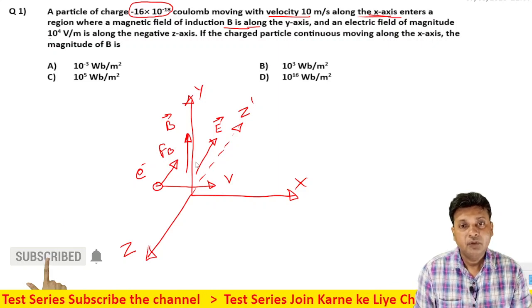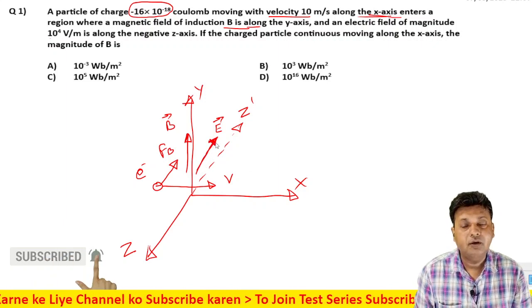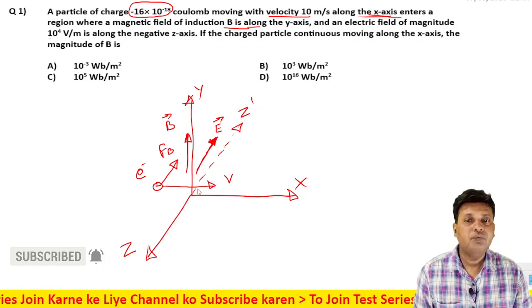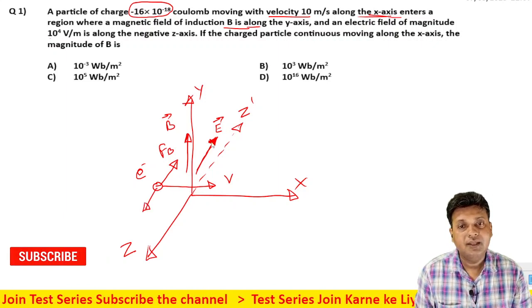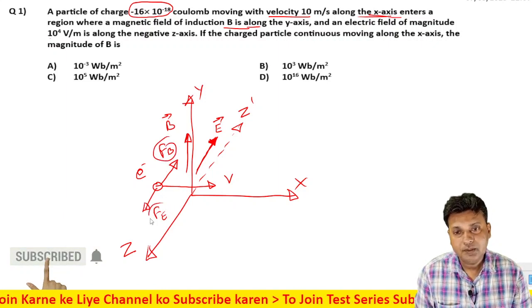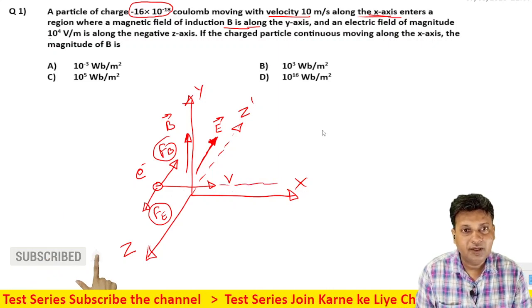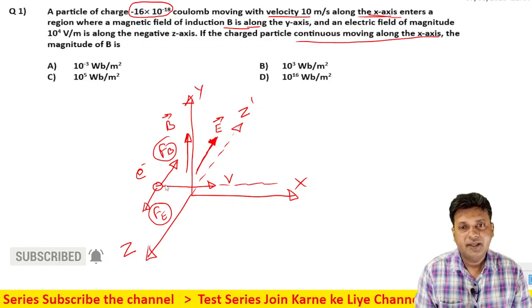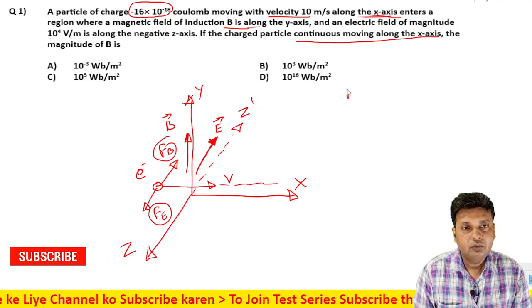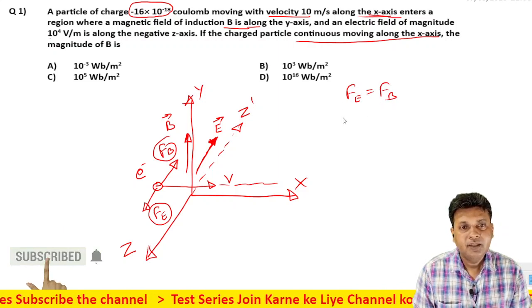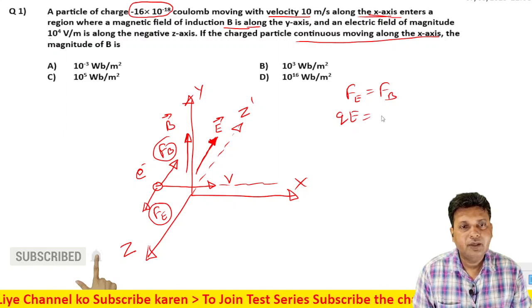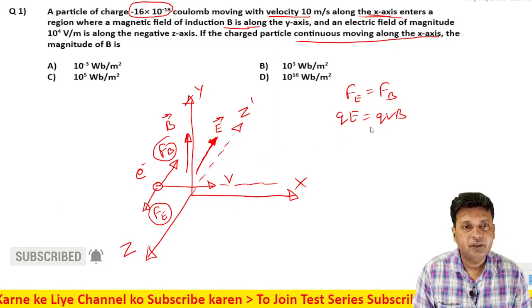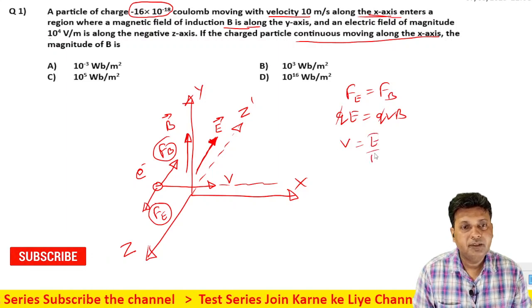The electric field produces a force on the charged particle. Since the charged particle continues to move along the x-axis without deviation, the normal forces must balance - the net force value is zero. Therefore, F_electric equals F_magnetic, which gives Q×E = Q×V×B×sin(theta). Since theta is 90 degrees, we get E = V×B.